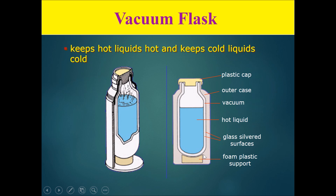How does it do it? The key point is that the sides of the flask are almost completely enclosed in a space where air has been sucked out, meaning this part is a vacuum. In addition, the part with the vacuum has glass silver surfaces, and there is also a plastic cap and a foam plastic support.